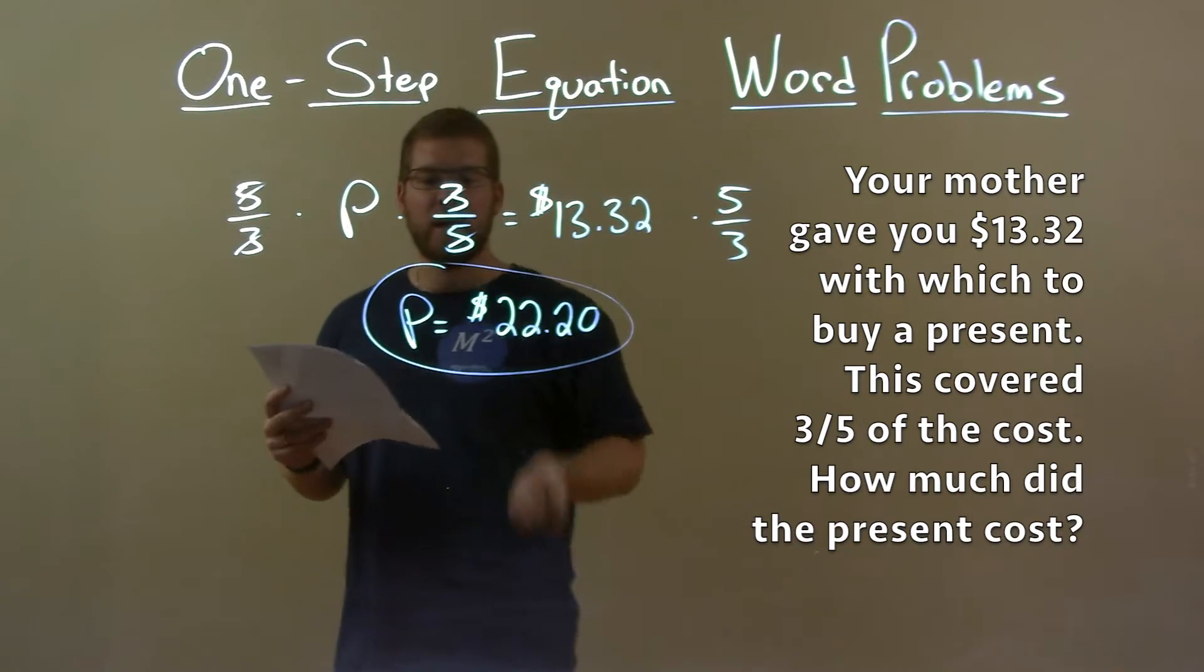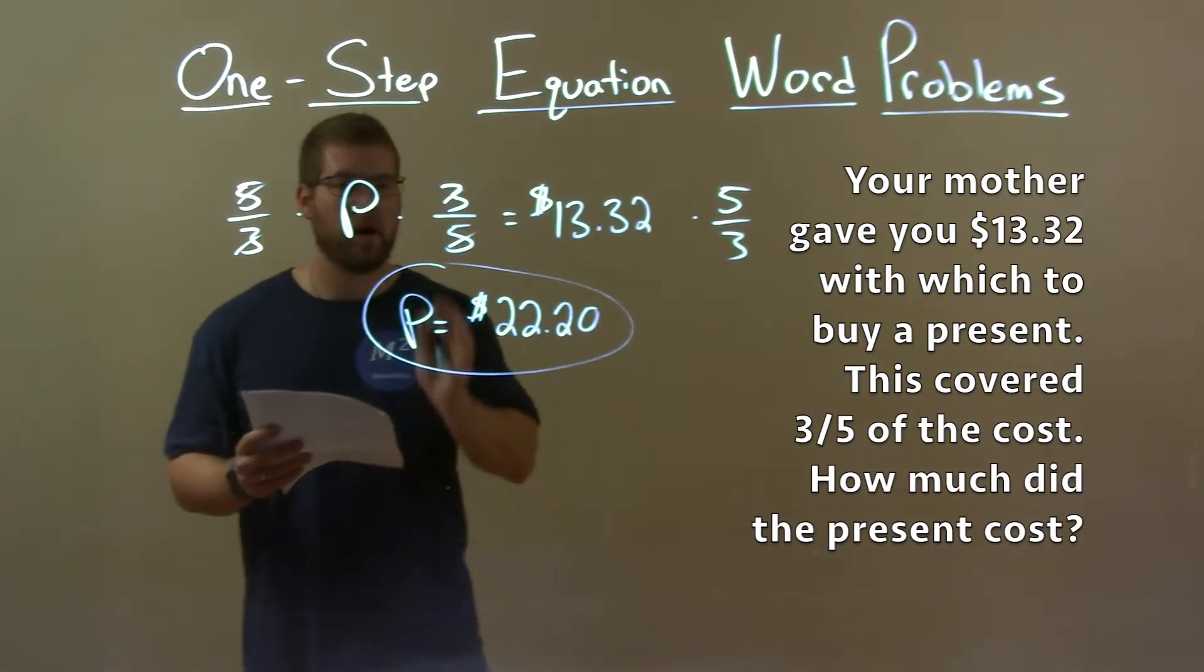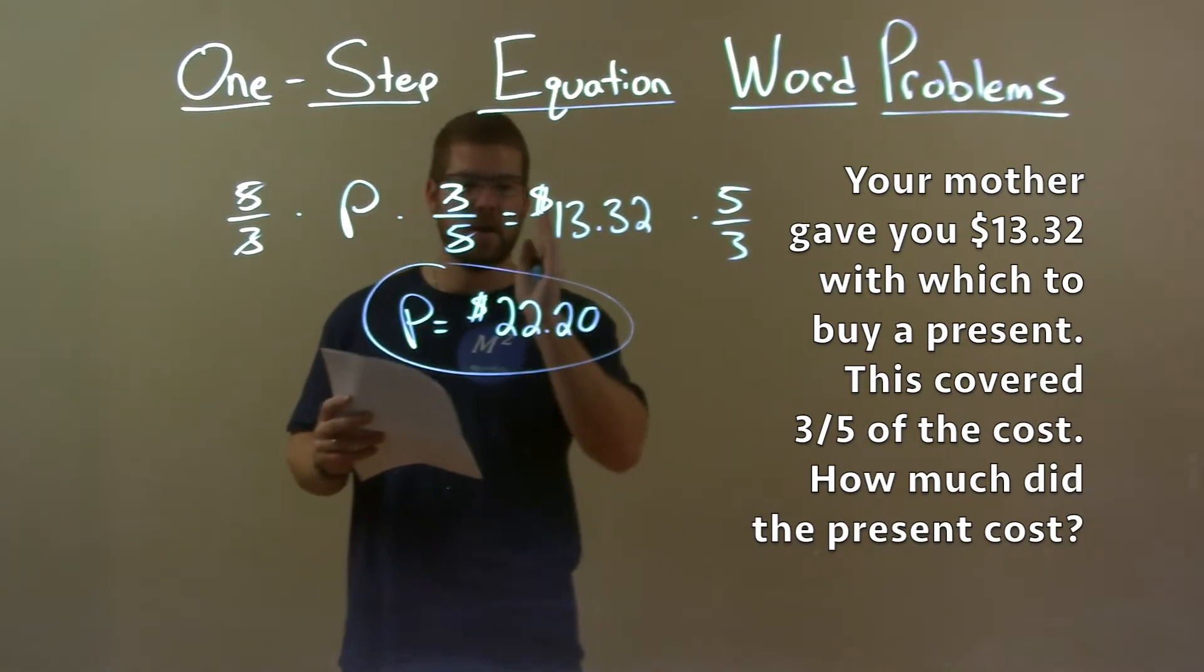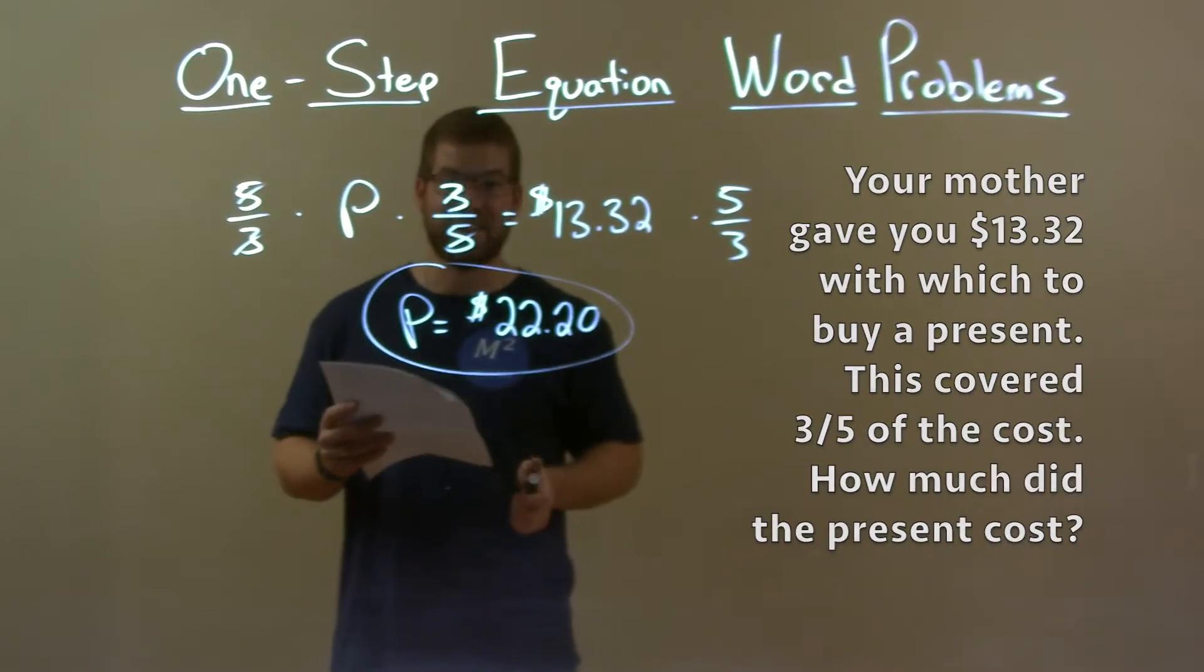Multiply both sides by five-thirds, giving me P by itself, the cost of the present equal to our final answer, $22.20. That makes sense.